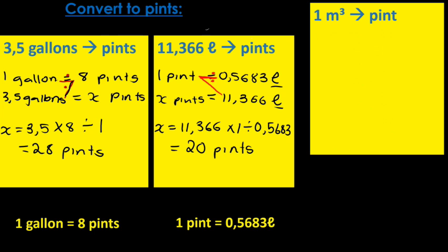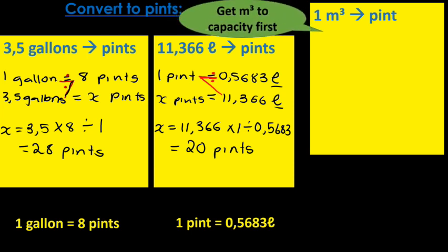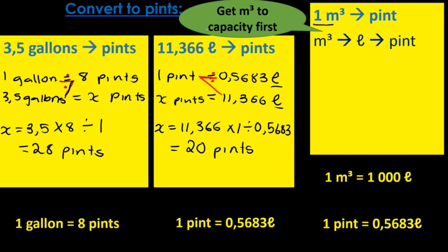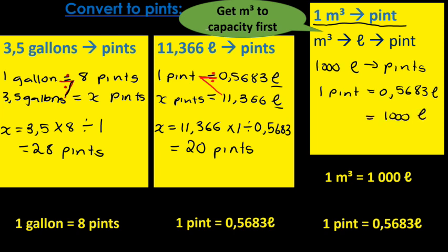The last question. They're saying one meter cubed converted to pints. Now I know that one meter cubed is equivalent to one kiloliter and a kiloliter is a thousand liters. So that is very important. So the process is going to be like this. We get meters cubed to capacity. I'm going to say 1000 liters to pints. So then I bring in what they told me. They said that one pint is equal to 0.5683 liters. That means 1000 liters here is equal to x pints.